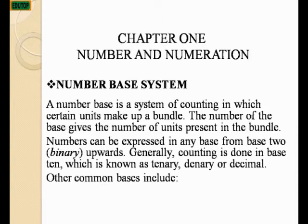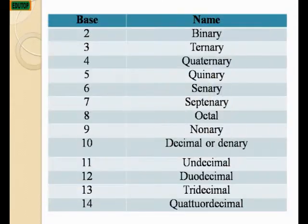Generally, counting is done in base 10, which is known as denary or decimal. Other common bases include: 2 (binary), 3 (ternary), 4 (quaternary), 5 (quinary), 6 (senary), 7 (septenary), 8 (octal), 9 (nonary), and 10 (decimal/denary).